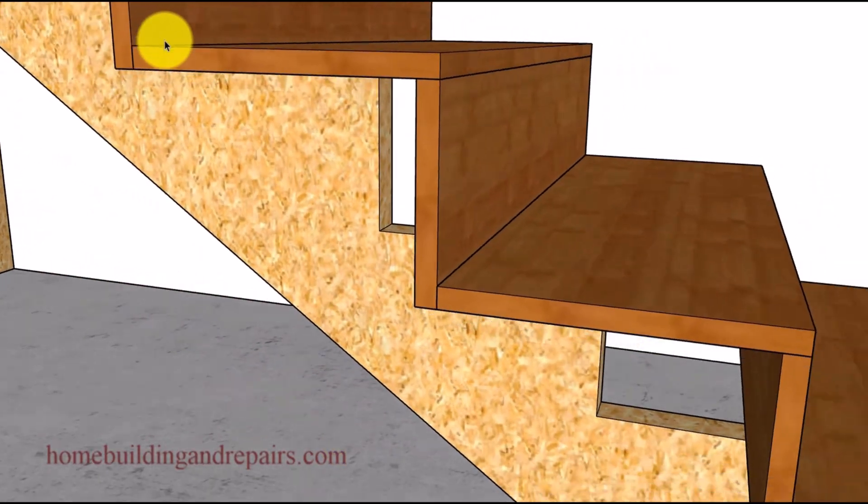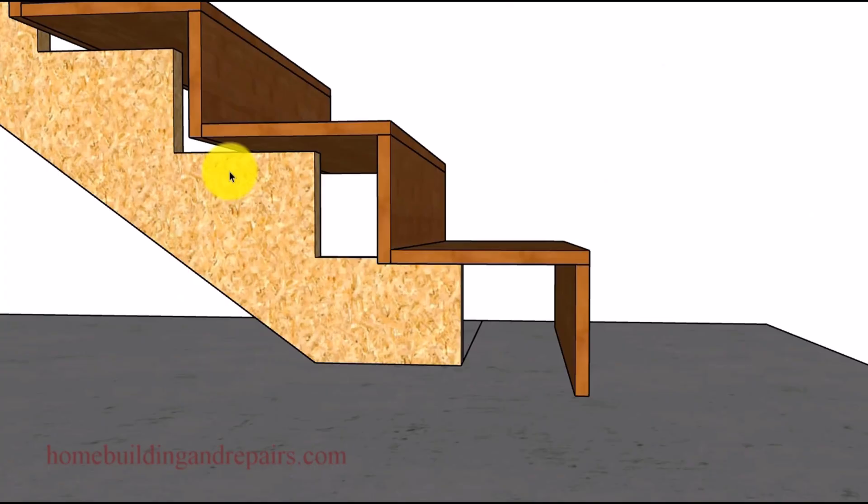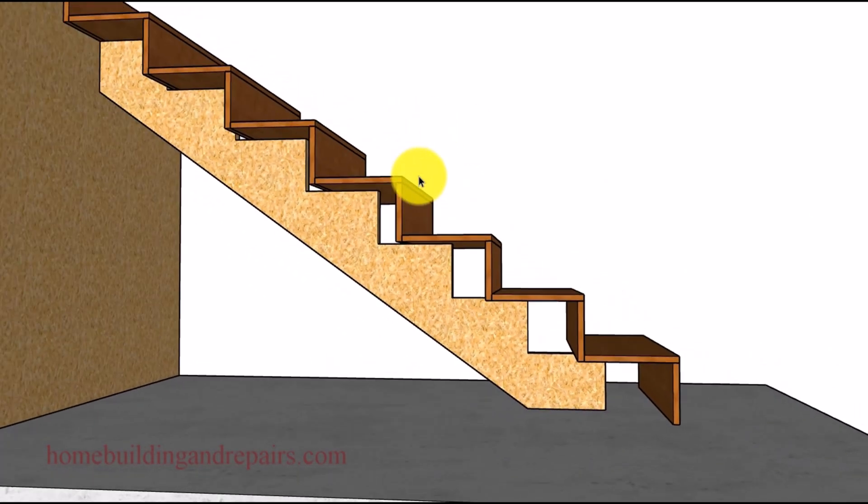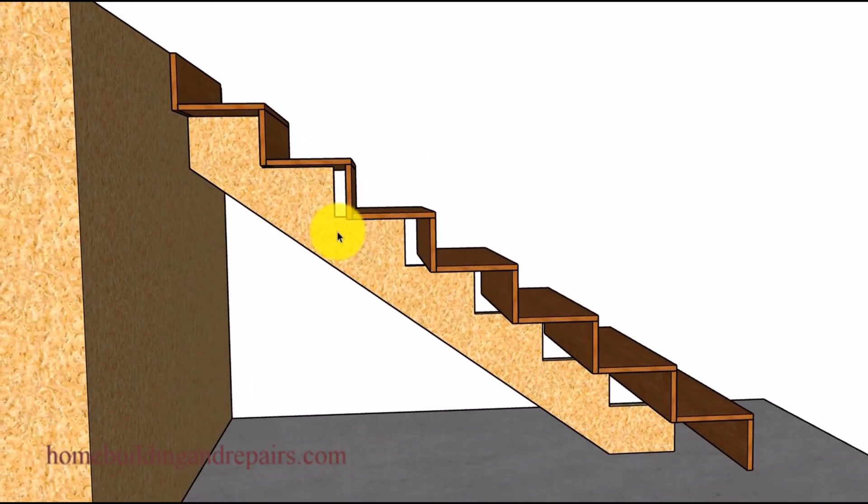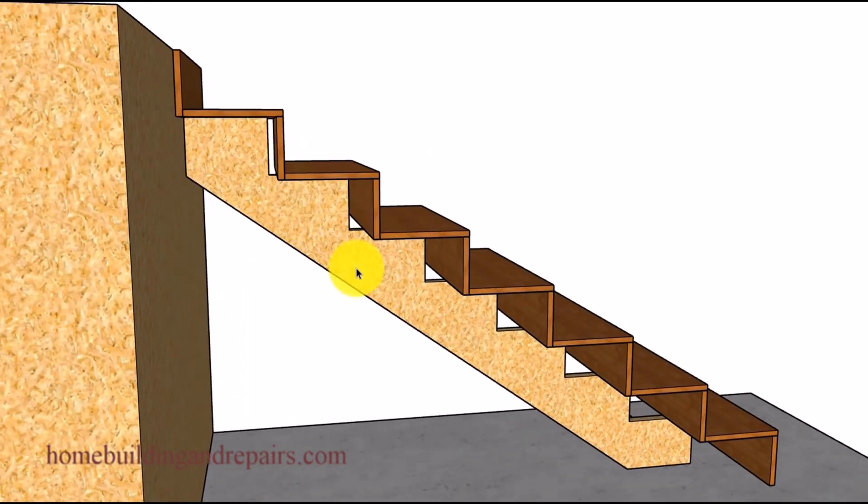Next up let's remove the stringer and replace it with a 10 inch one. However we are not going to change the position of the treads and risers to provide you with a better idea of what is actually happening. We are going to be gaining one inch for every single step: one inch longer here, two inches here, three inches, four, five, six, and then seven.